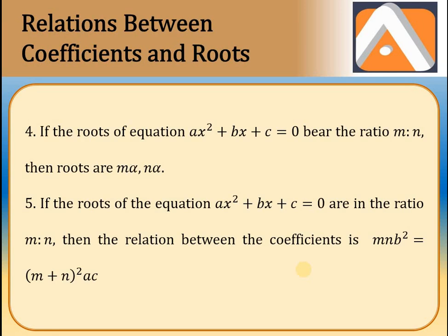Regarding the relation between the coefficients and roots: if any quadratic equation's roots are in the ratio m : n, then you take the roots as mk and nk. If roots are in the ratio m : n, the relation between the coefficients is: (m+n)² · ac = mn · b². This formula will be derived in detail in later classes.